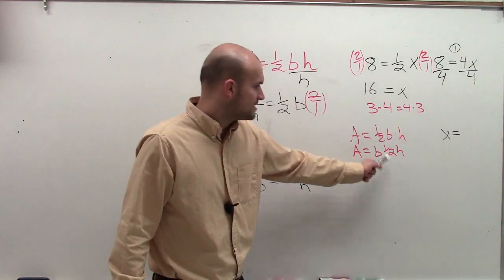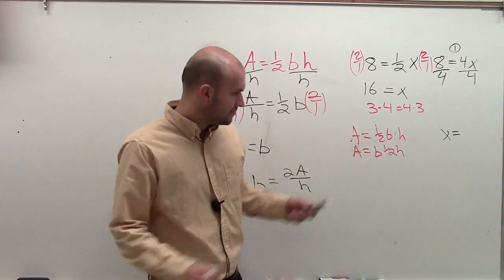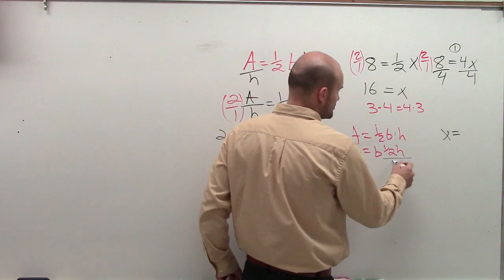Now, what is being multiplied by b? One-half h, right? So you could just do this at the same time.